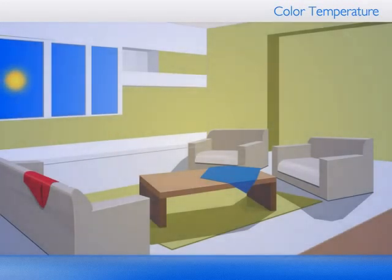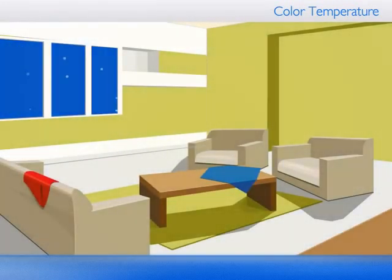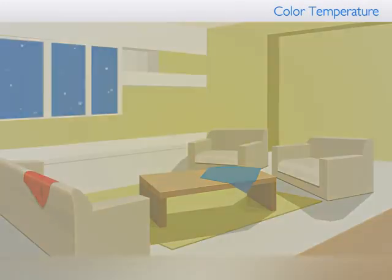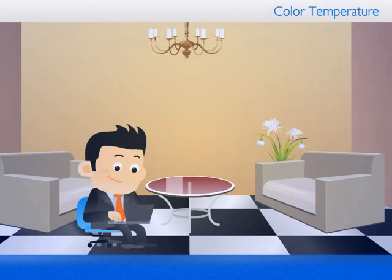Climate. People living in hotter climates generally prefer cooler white. Warm white is preferred in the colder climate regions. Lighting level. Cooler white light requires higher lighting levels to prevent the room from looking gloomy.